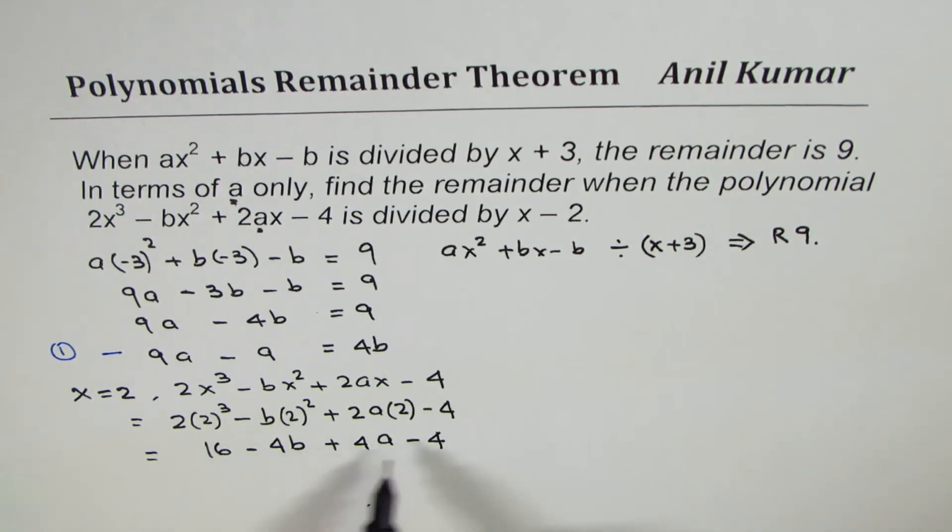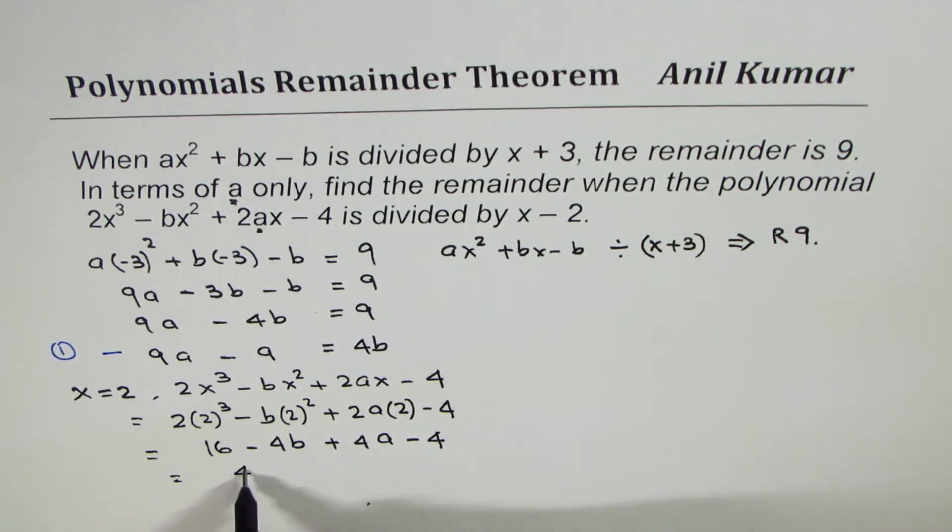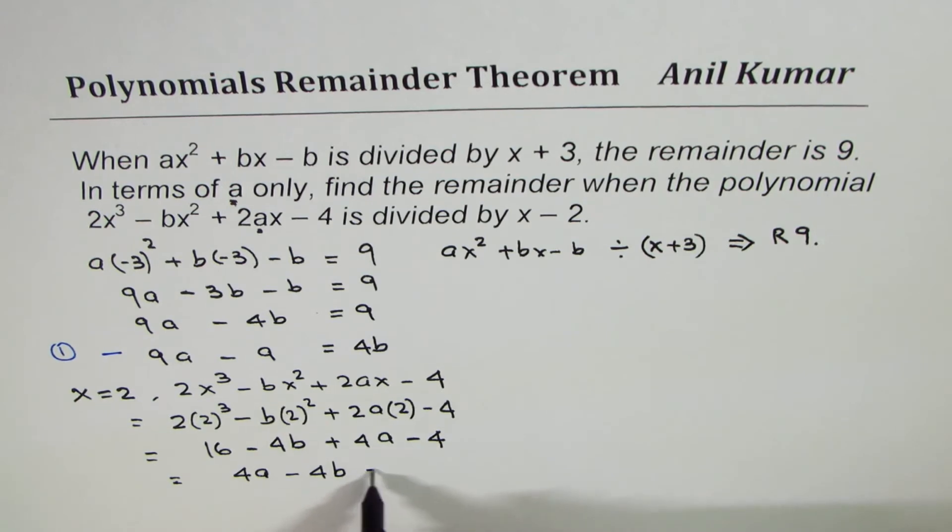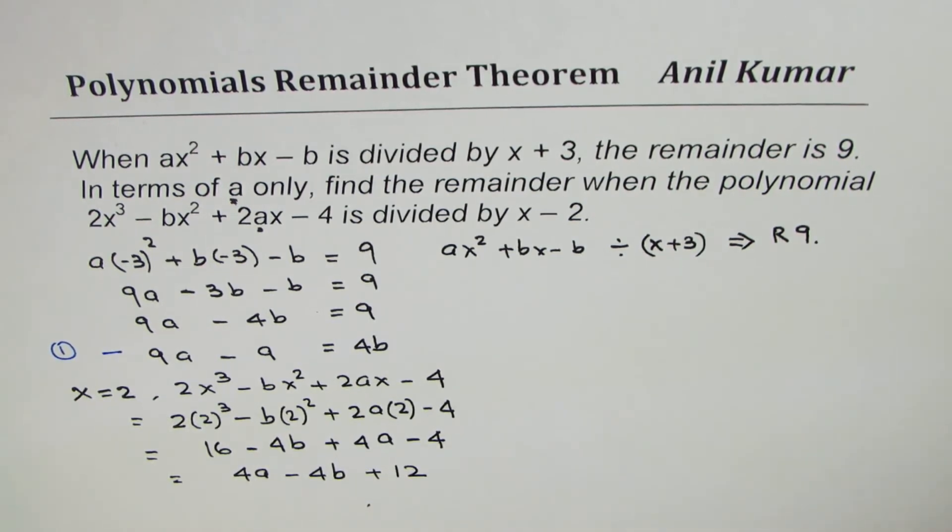Now let's combine these constants. So we are left with 4a minus 4b, 4a minus 4b. And here we have 16 minus 4 which is plus 12. So that is the value which we get.